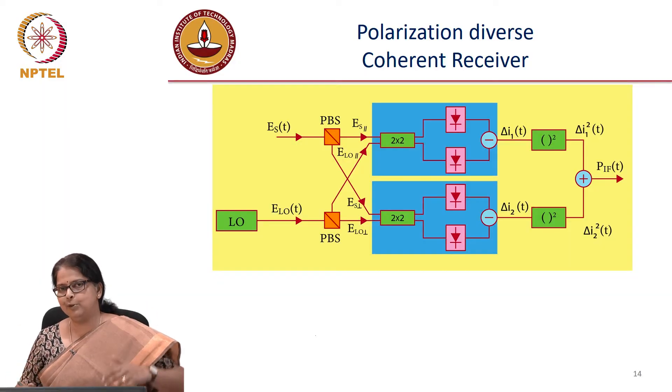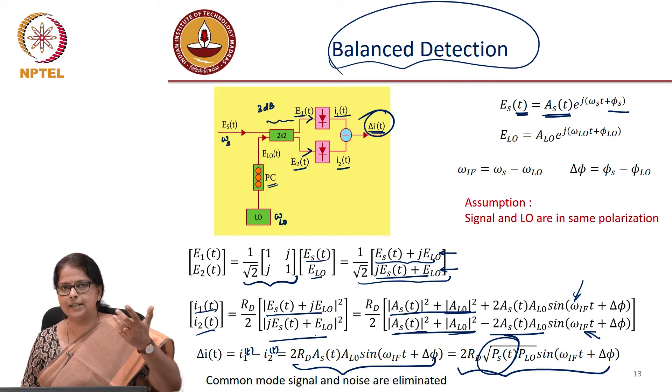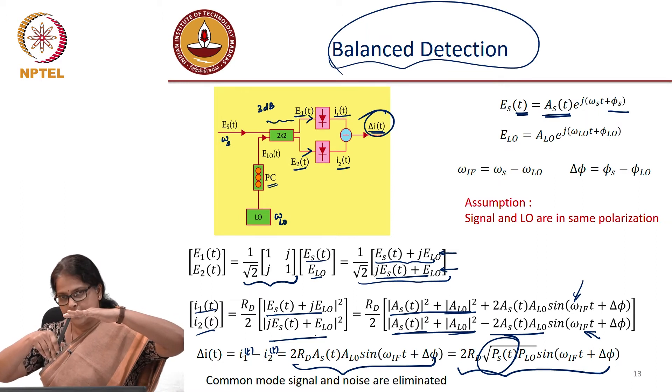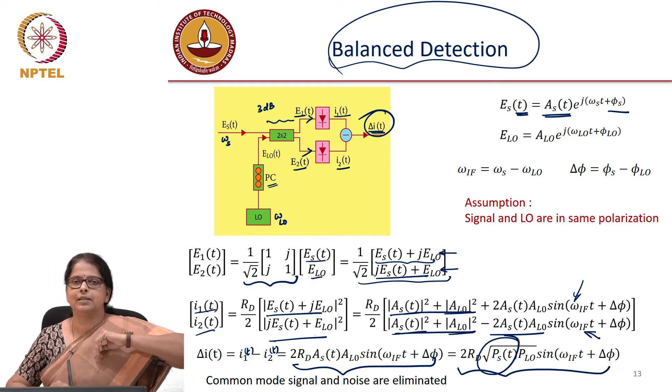What about polarization now? Suppose my input has two polarizations. Here, my input had only one polarization and I was aligning my local oscillator to that polarization. But what if my input has two polarizations?